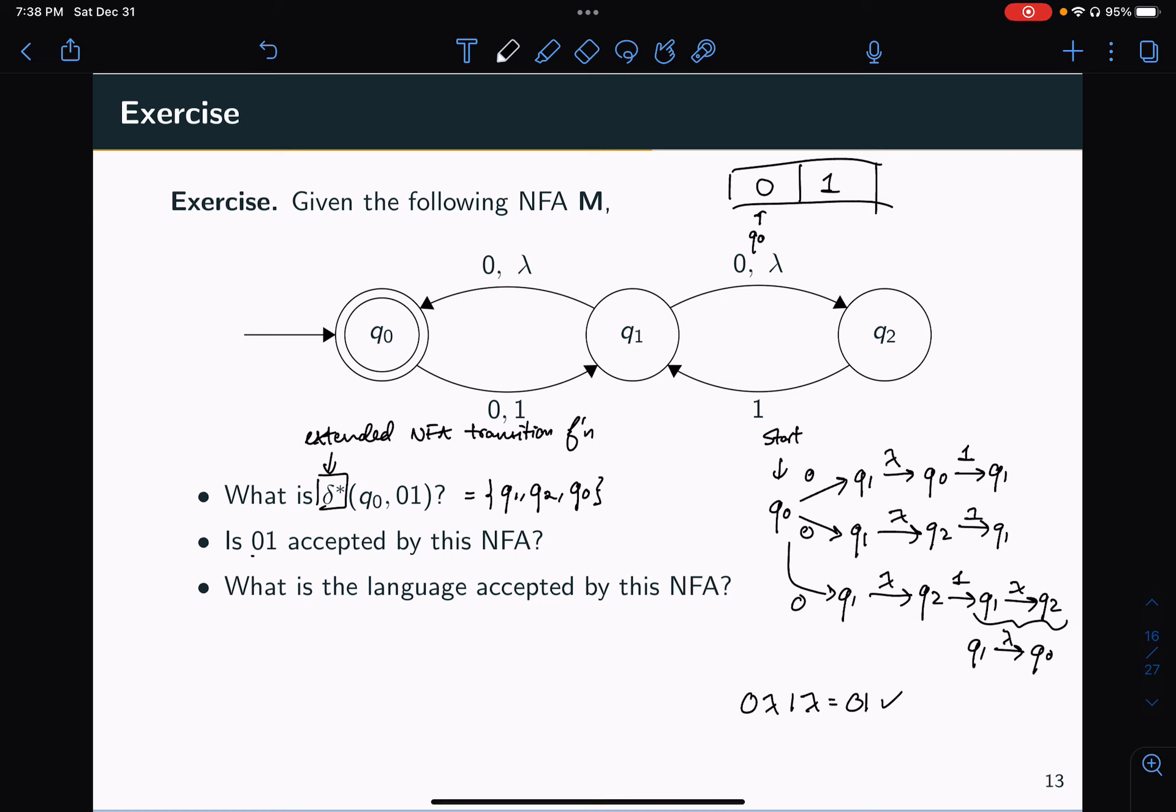And so then the next question, is zero one accepted by this NFA? Well, the condition for this is that the set of states that I can reach from Q0 while reading this string zero one contains at least one final state, i.e., I need delta star Q0 zero one intersect the set of final states to be non-empty. But what this is, this is just Q0, Q1, Q2 intersect. What is the set of final states? In this case, it's just Q0.